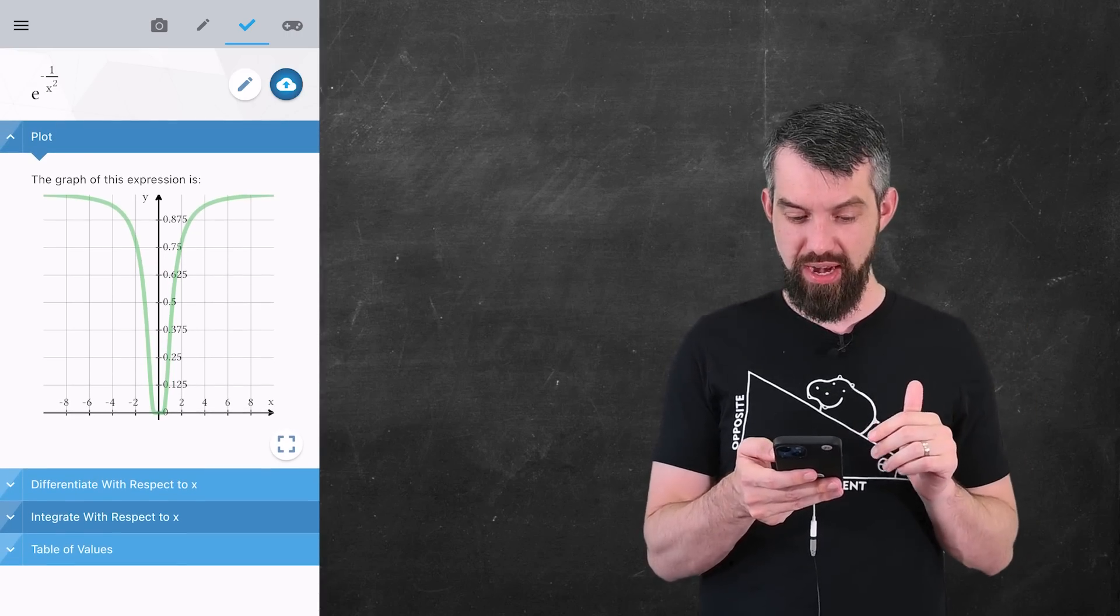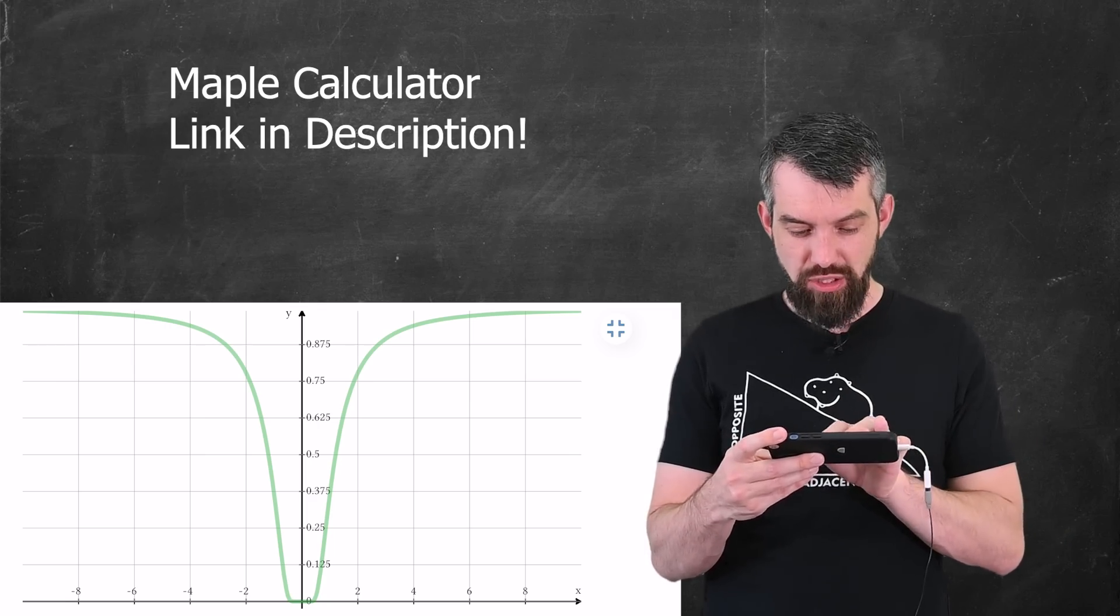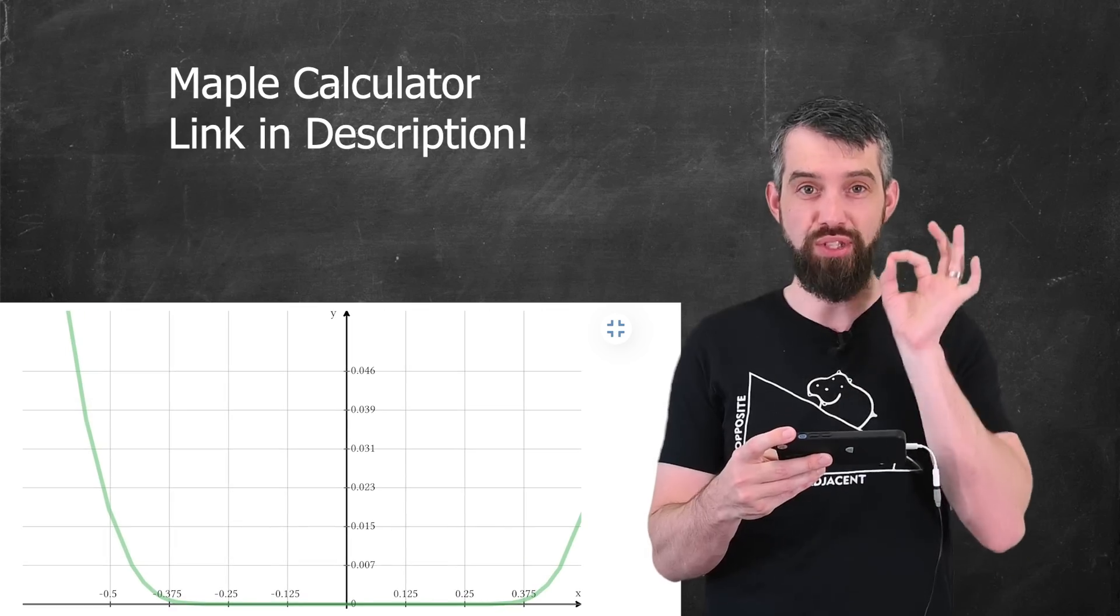I could do many things here, I could differentiate or integrate it. But what I really want to go in is look at this plot. If I zoom in near x equal to 0, it looks pretty much entirely horizontal.